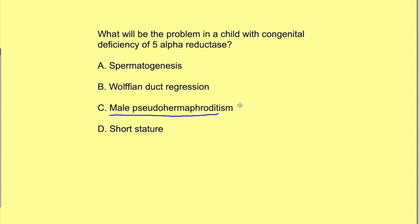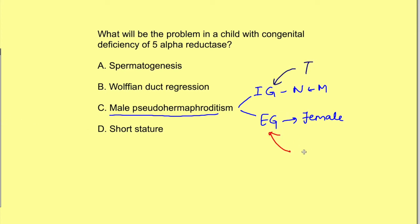What is pseudo-hermaphroditism? It means that the internal genitals are normal like those of a male, but the external genitals look like those of a female. We said that testosterone directly is responsible for formation of internal genitals, while for the development and enlargement of external genitals, dihydrotestosterone is needed — and this is formed when 5-alpha reductase acts on testosterone. So in this case, internal genitals will be male while external genitals will look female — hence the person suffers from male pseudo-hermaphroditism.